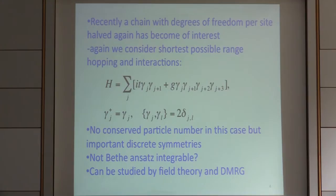You might think these models are getting simpler and simpler with fewer degrees of freedom, but actually this model is quite a bit more challenging. One reason is it doesn't have any conserved particle number — there's no conserved U(1). It's not Bethe Ansatz integrable, as far as we know. But we were able to study it using field theory methods and numerical techniques, and we have a pretty good understanding of the phase diagram.